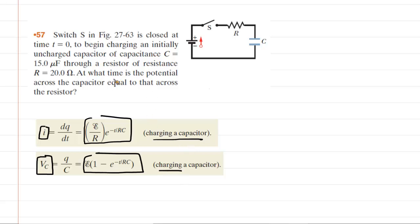Now, this question asks us about a specific time when the potential across the capacitor is equal to the potential across the resistor. So in other words, the potential across the capacitor is equal to the potential across the resistor.